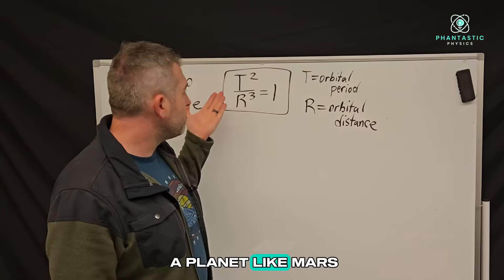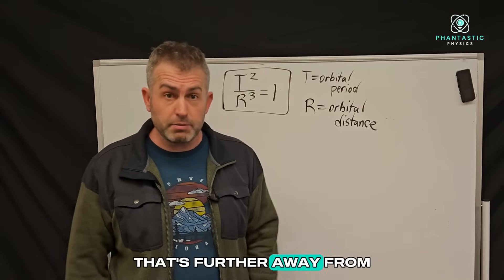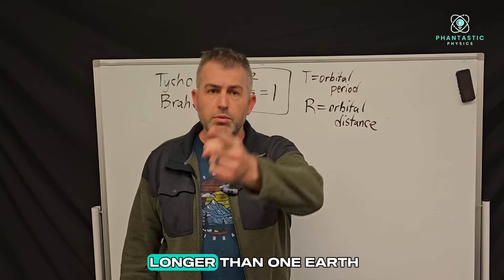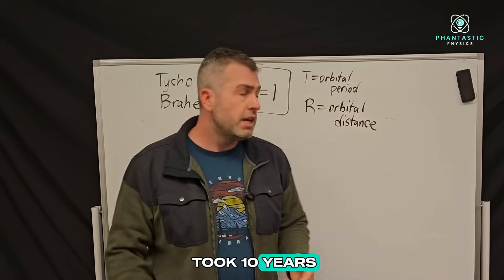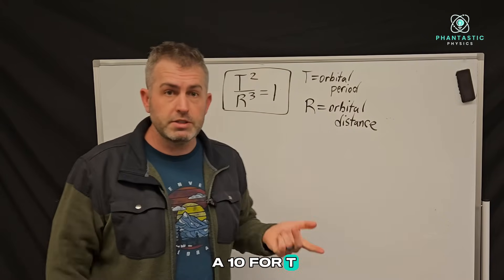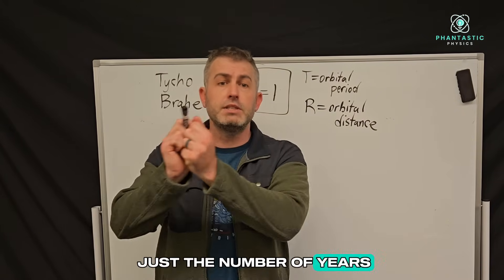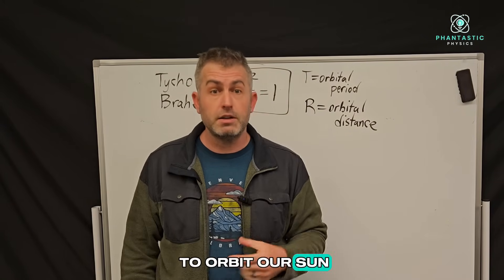But if this was a planet like Mars or Jupiter that's further away from the sun, it would take much longer than one earth year to orbit the sun. So if it took 10 years, we would plug in a 10 for T. Orbital period is just the number of years it takes a planet to orbit our sun once.